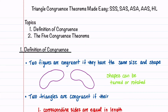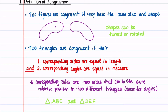Before we dive into the five ways two triangles can be congruent, we need to make sure we know what congruence means. I've placed two figures here that look like peanuts to show you what congruence is. Two figures are congruent if they have the same size and the same shape. It doesn't matter what position they're in, or if they're turned or rotated. In a similar way, two triangles are congruent if their corresponding sides are equal in length and if their corresponding angles are equal in measure.